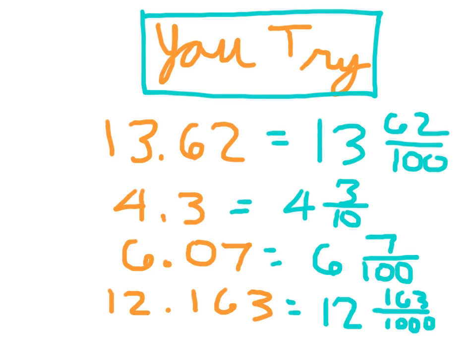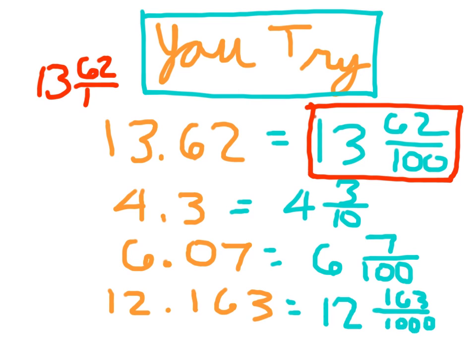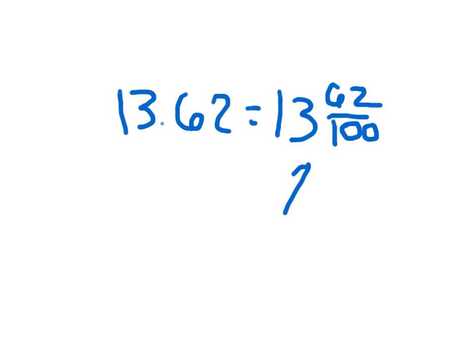One other thing that you might be asked to do is write the fraction in simplest form. So the one that is not in simplest form here is this first one, 13 and 62 hundredths. Let me add a screen. So 13 and 62 hundredths in simplest form, we divide by 2 in the numerator and denominator. And then we get 13 and 31 fiftieths. We know at that point that's in simplest form because 31 is a prime number.